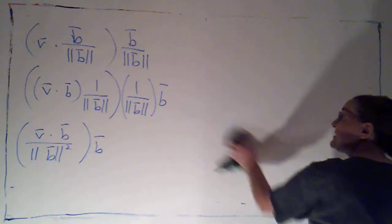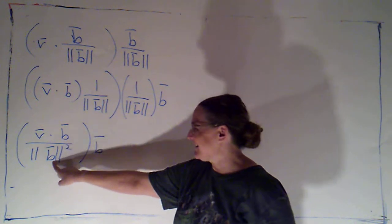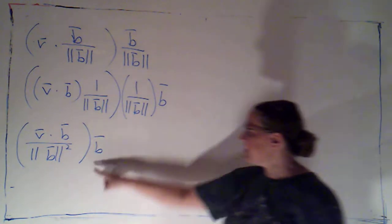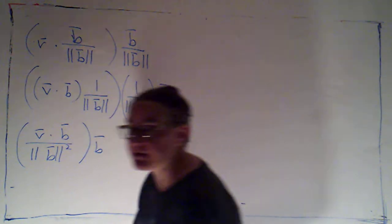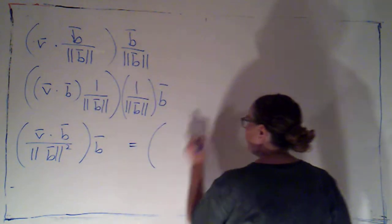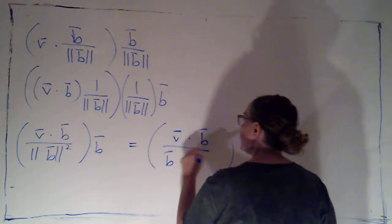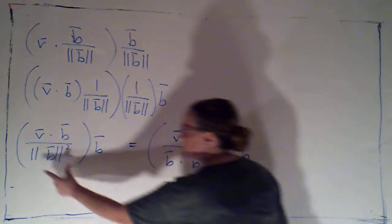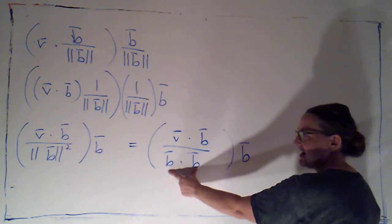Alright, excellent. Now notice, if B was a unit vector, this is just going to be 1 in the denominator, and I get back the formula for projecting onto a unit vector. But this is a more general formula, so that I can project onto any vector. And you'll sometimes see it written this way, V dotted with B over B dotted with itself, copies of B. Because of course, the magnitude of B squared is just B dotted with itself.